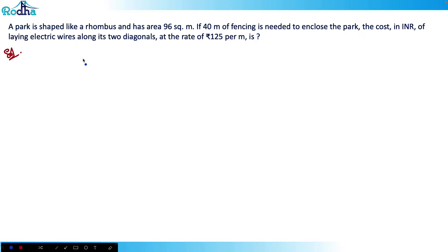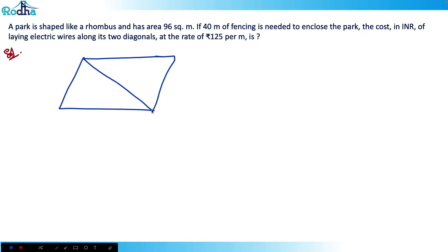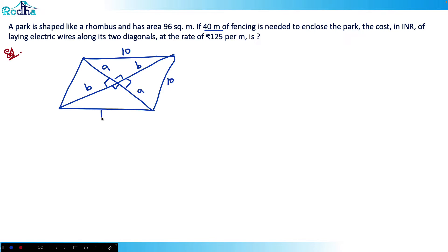Let's draw a rhombus. In a rhombus, the diagonals bisect each other at 90 degrees. Let's label the half-diagonals as A and A, and B and B. The total fencing is 40 meters and since all four sides of a rhombus are equal, each side is 10 meters.